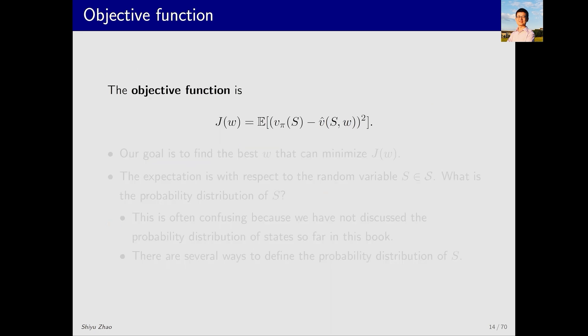This is the objective function for value function approximation. The objective function J(w), where w is the parameter we want to optimize, is defined as follows. It equals an expectation of the squared error between the true state value and the estimated state value. Here, our goal is to find the best w to optimize this objective function.